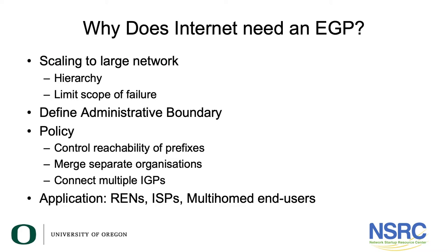Why does the Internet need an EGP? EGPs are needed for scaling to large networks. They provide hierarchy and also limit the scope of failure. EGPs define administrative boundaries and provide policy in terms of controlling reachability of prefixes, as well as merging separate organizations together, and are also used for connecting multiple IGPs. Typical examples of EGP usage are RANs, ISPs, and multi-homed end-users.